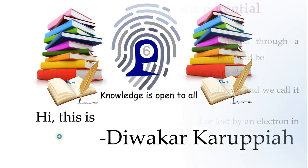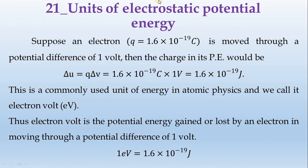Hi, this is Divakar Karupaya. Units of electrostatic potential energy. Suppose an electron, Q is equal to 1.6 times 10 to the power minus 19 coulombs, is moved through air with a potential difference of 1 volt. Then the change in its potential energy would be: